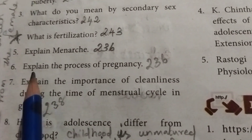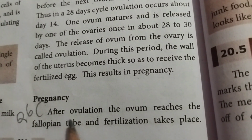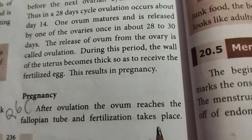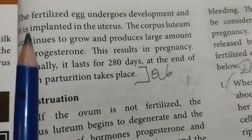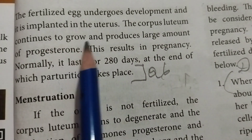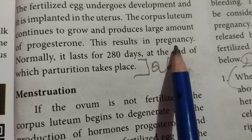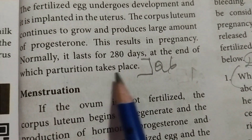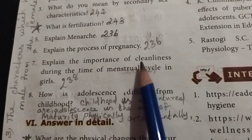Question 6: Explain the process of pregnancy. Take page number 236. After ovulation, the ovum reaches the fallopian tube and fertilization takes place. The fertilized egg undergoes development and is implanted in the uterus. The corpus luteum continues to grow and produces a large amount of progesterone, resulting in pregnancy. Normally it lasts for 280 days, at the end of which parturition takes place.